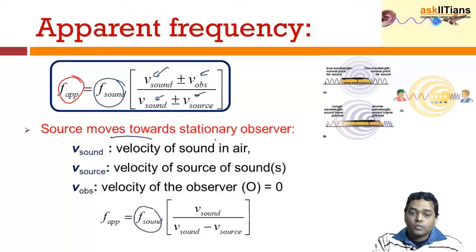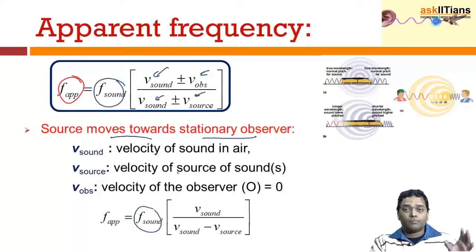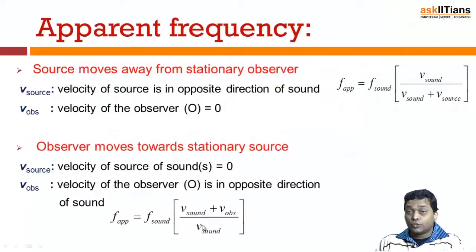If you take the source is moving towards the stationary observer, the observer is stationary. So V observer is going to become 0. When you are moving towards the observer, that means the sound and the source are moving together. So the relative velocity between them is going to be negative. That's the reason you have a negative sign out here. So the frequency is going to increase.